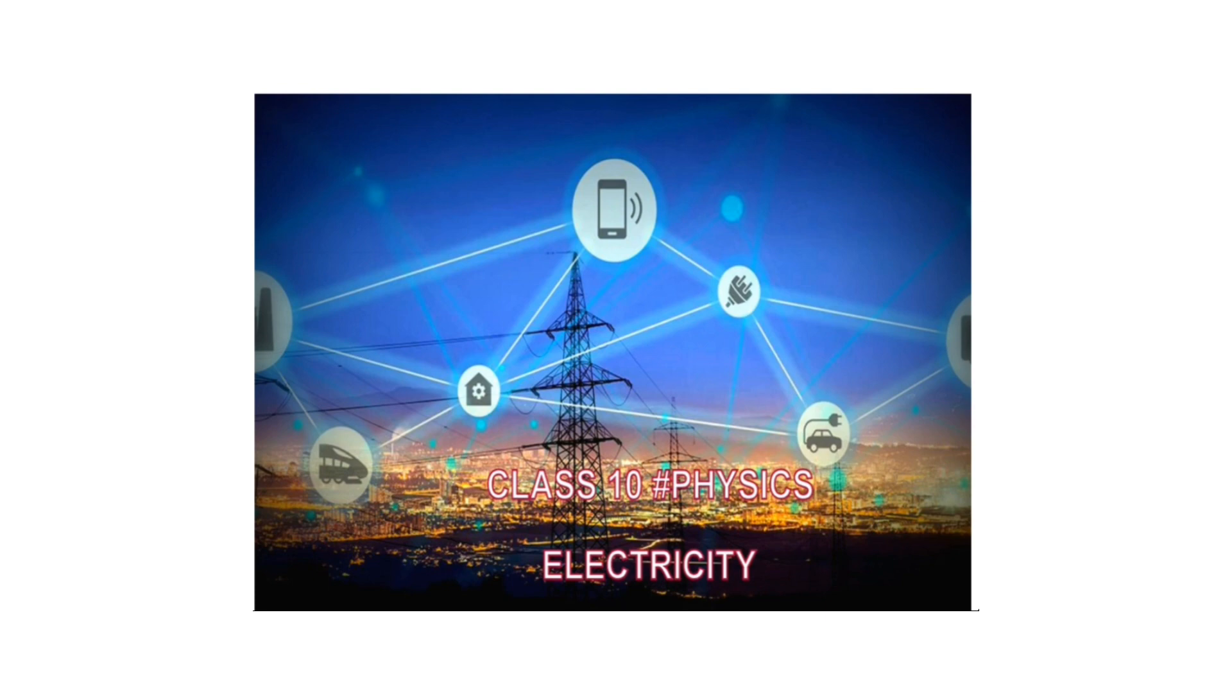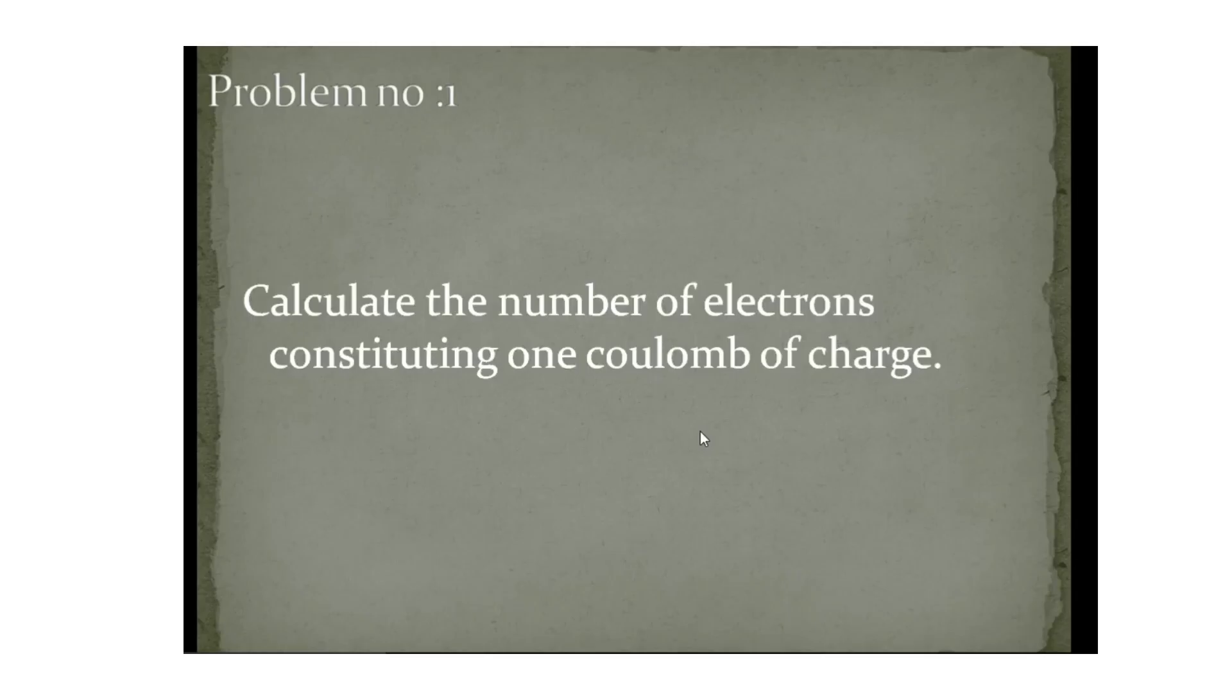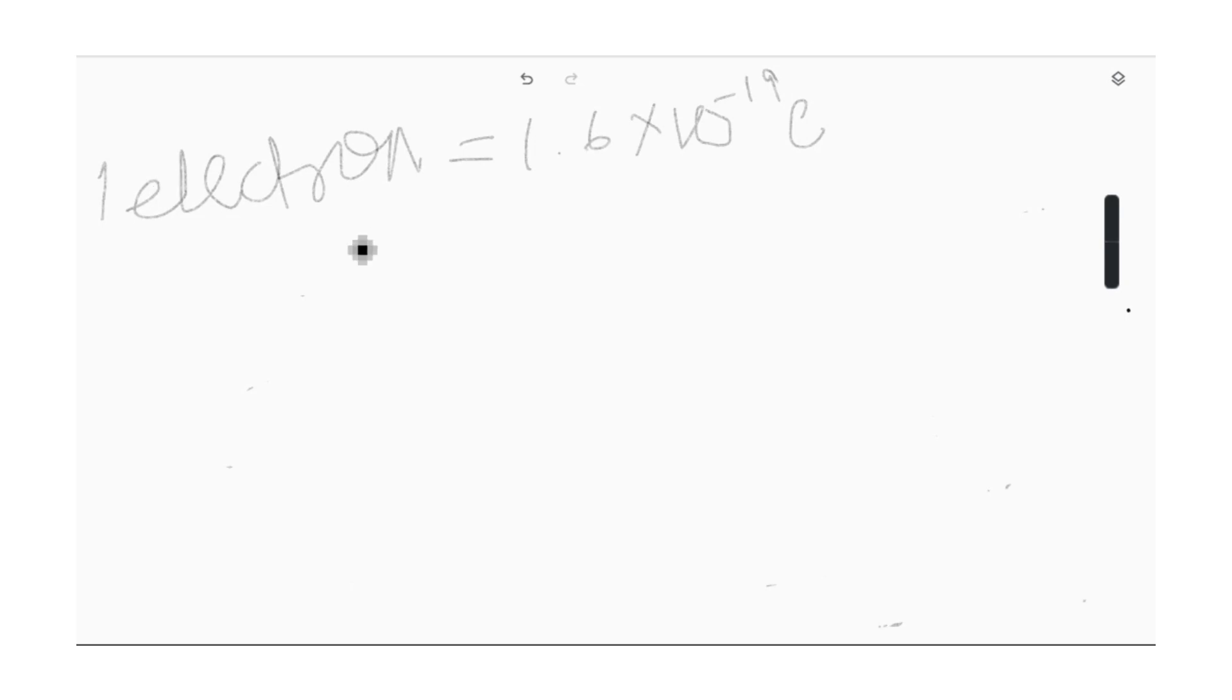So here is Problem Number 1: Calculate the number of electrons constituting one coulomb of charge. We know that one electron carries a charge of 1.6 into 10 to the power minus 19 coulomb.